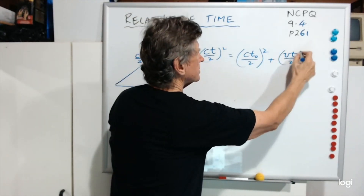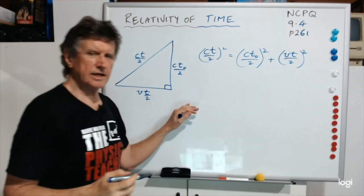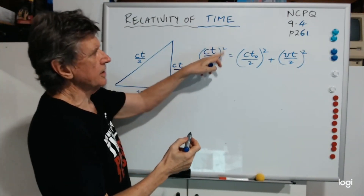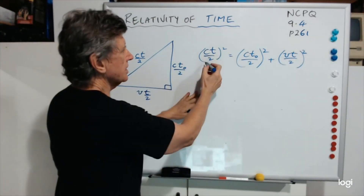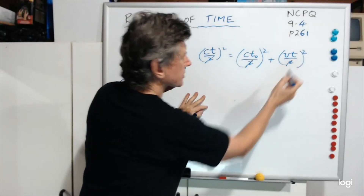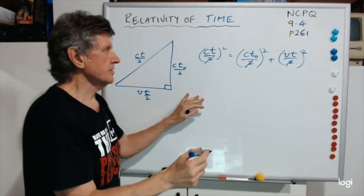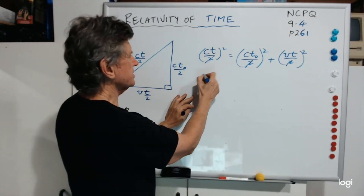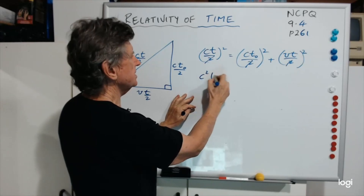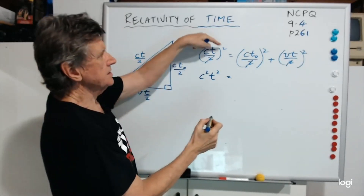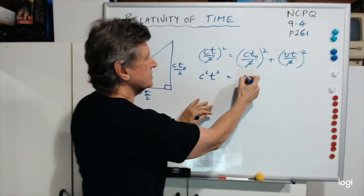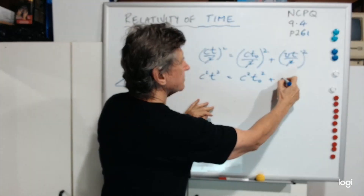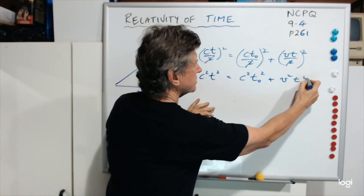Now let's simplify that. We can cancel the 2 throughout because it appears all the way through, and we expand: C²T² = C²T0² + V²T².